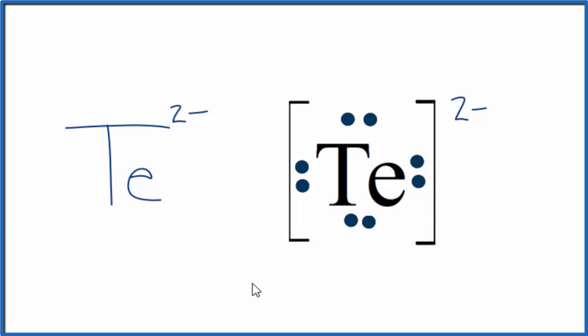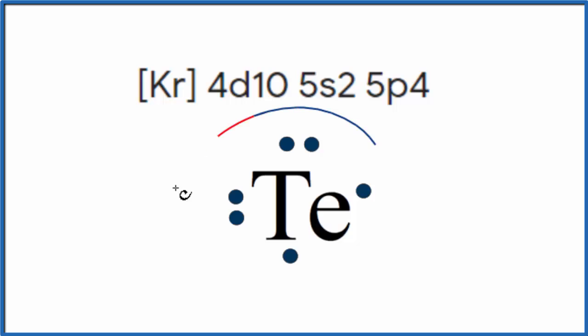The other way we could do this is look at the electron configuration for Te. So let's go back just to our Te. So we have our Te Lewis structure, and we can see that if we have the condensed notation for Te, the condensed electron configuration, these are considered the valence electrons.